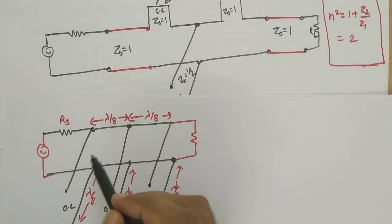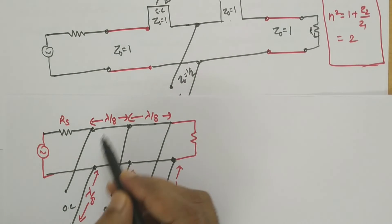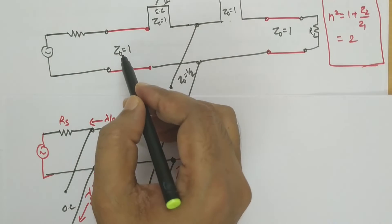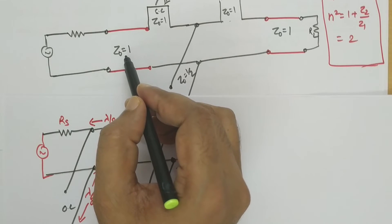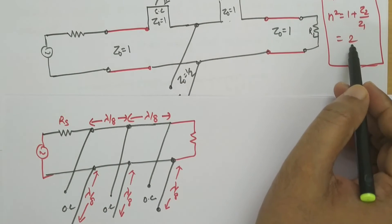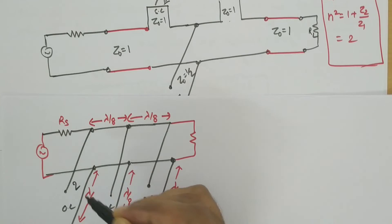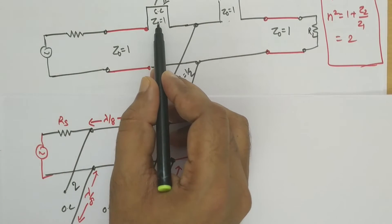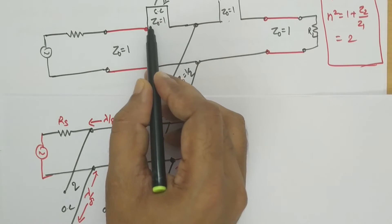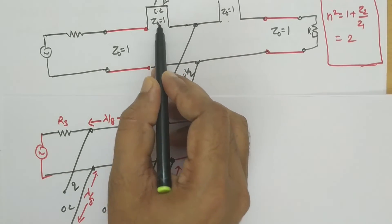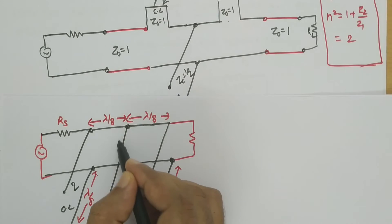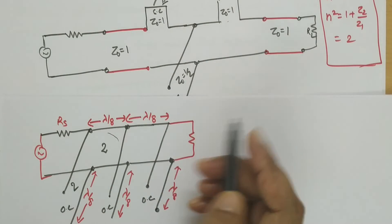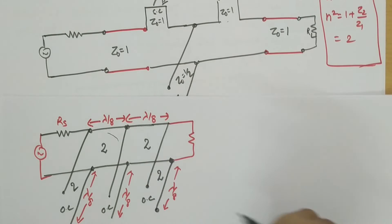Now we calculate the values of each section. The original Z₀ of the series stub was 1, so after Kuroda transformation it becomes Z₀ multiplied by n squared: 1 times 2 equals 2. The added transmission line sections also get multiplied by n squared, giving characteristic impedance of 2. Similarly on the right side we have 2 and 2. The middle shunt stub section retains its characteristic impedance of one-half.